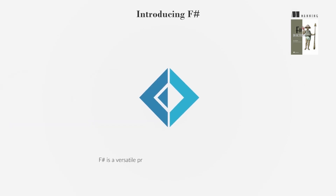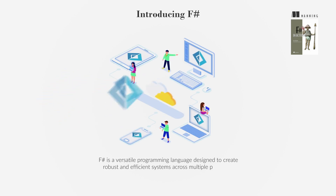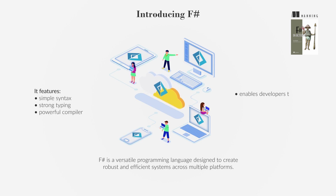F-Sharp is a versatile programming language designed to create robust and efficient systems across multiple platforms. It features a simple syntax, strong typing, and a powerful compiler, enabling developers to model complex systems easily.